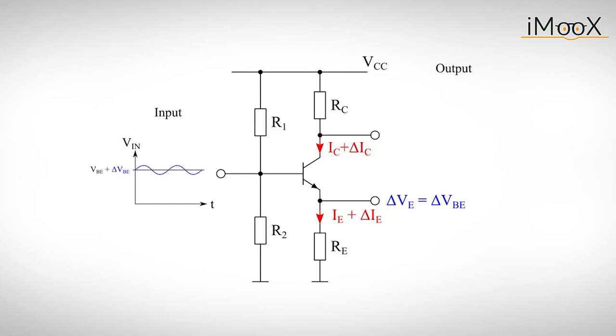The changing emitter current, delta IE causes nearly the same change in collector current, delta IC, and therefore a changing voltage at the resistor RC, which leads to a changing output voltage, delta VC. And there we have it, a voltage amplifier.